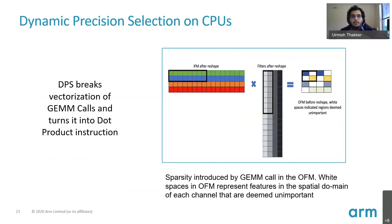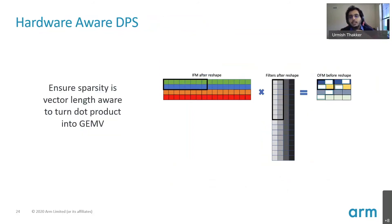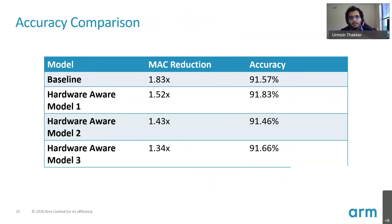From a similar perspective, dynamic precision selection also breaks the GEMM assumption. It determines certain points in the output feature map are not important, and from a GEMM point of view, the random sparsity introduced causes GEMM kernels to turn into dot product kernels. However, again we are able to force hardware awareness into dynamic precision selection techniques, and when we do that, our dot product instructions turn back into GEMM instructions, allowing MAC reductions to actually translate into real speedups.